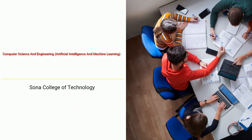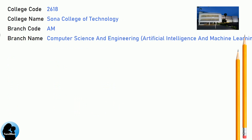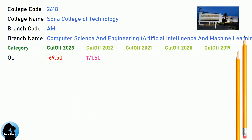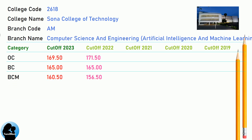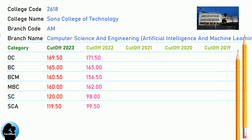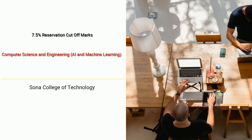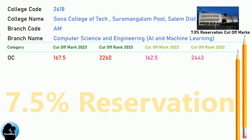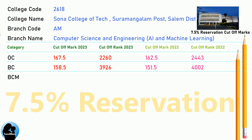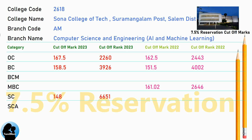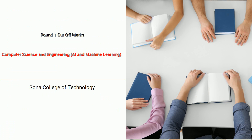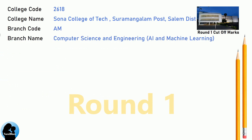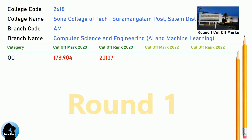DNA cut-off for Sona College of Technology in Computer Science and Engineering – Artificial Intelligence and Machine Learning. DNA 7.5 Reservation cut-off for Sona College of Technology in Computer Science and Engineering, AI and Machine Learning. DNA Round 1 cut-off for Sona College of Technology in Computer Science and Engineering, AI and Machine Learning.